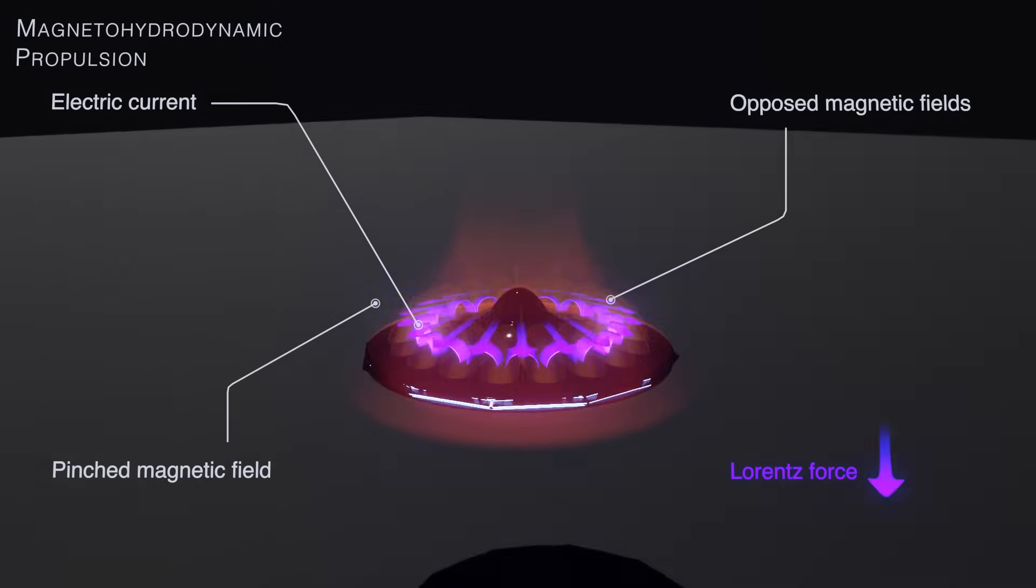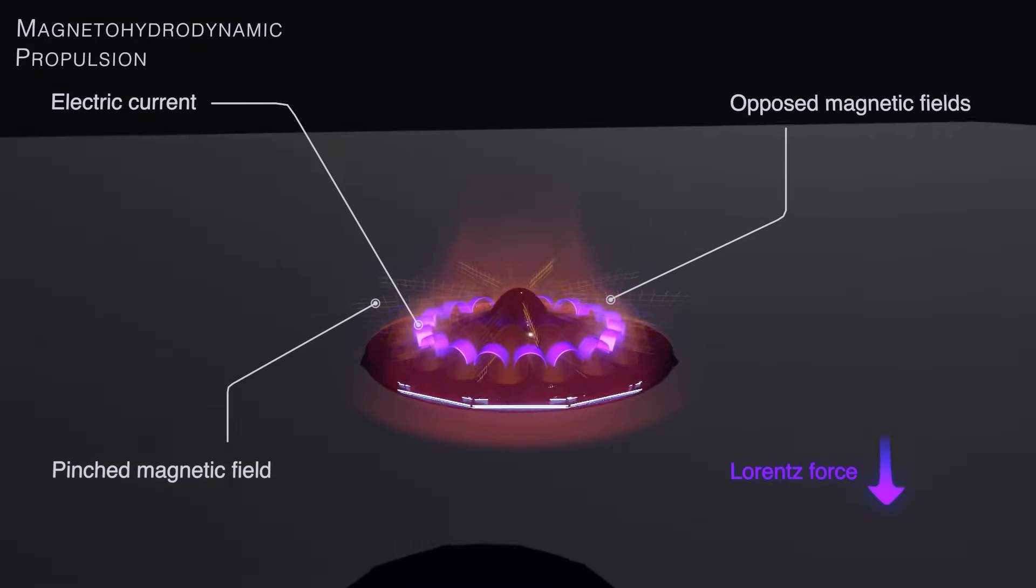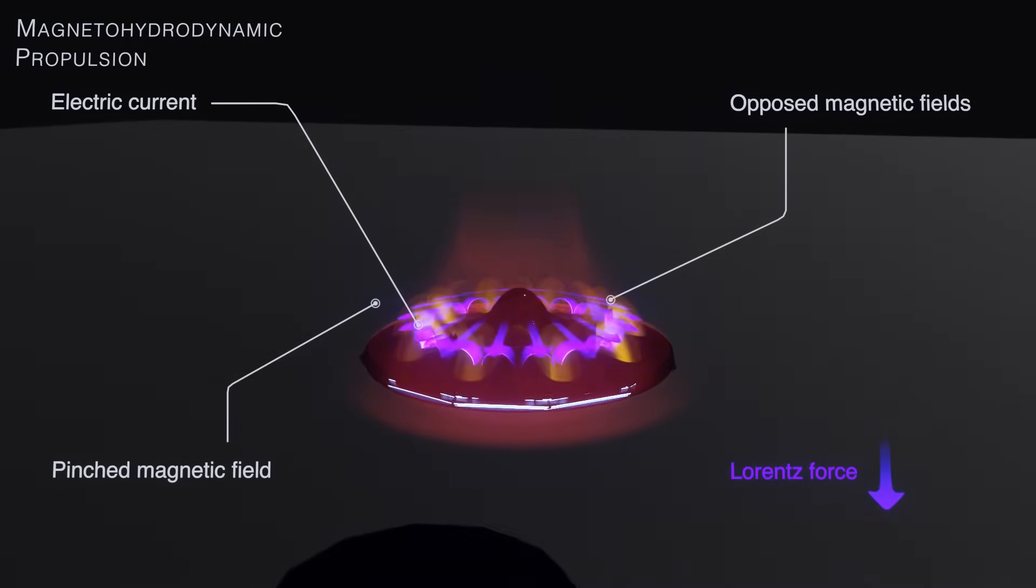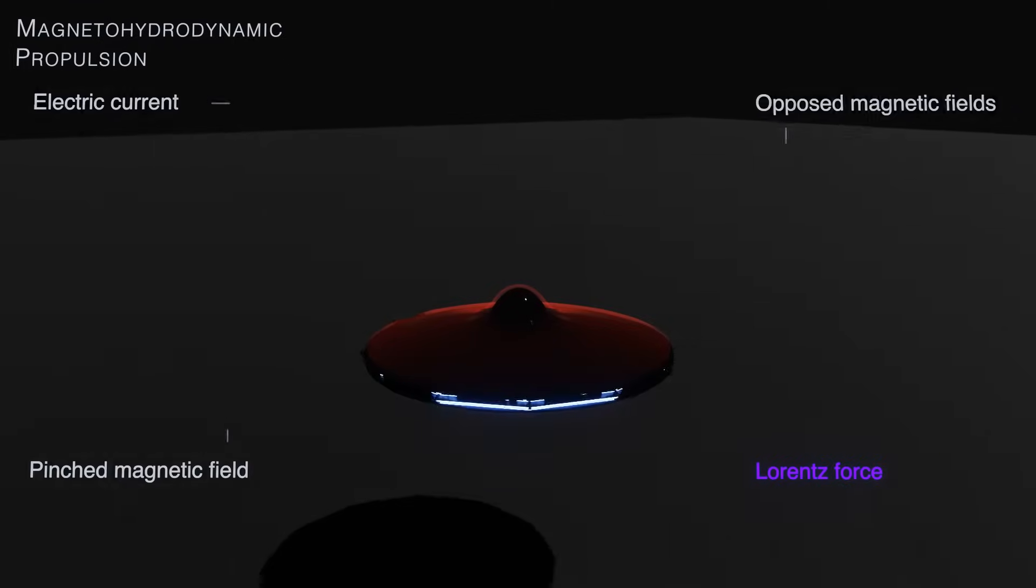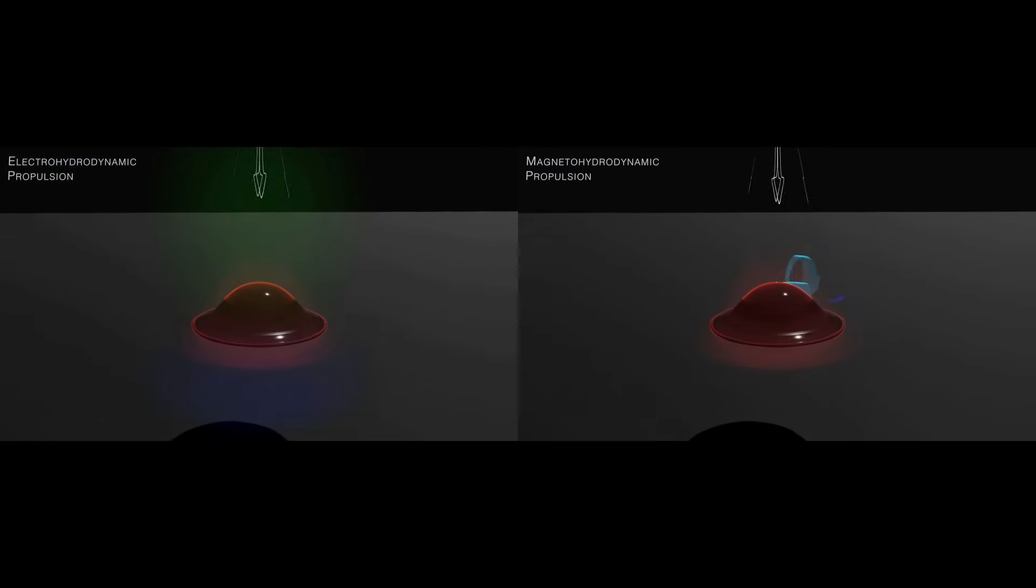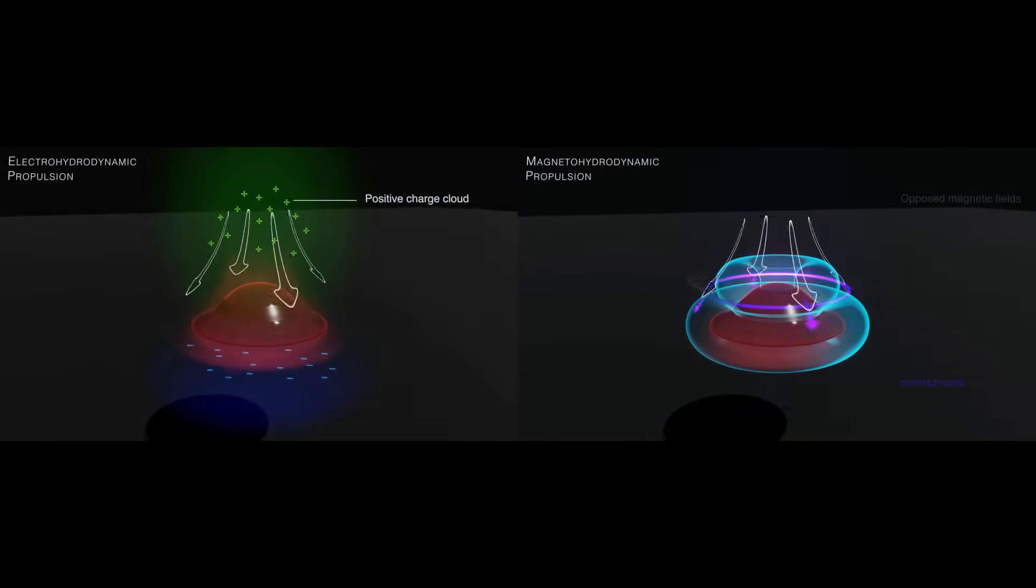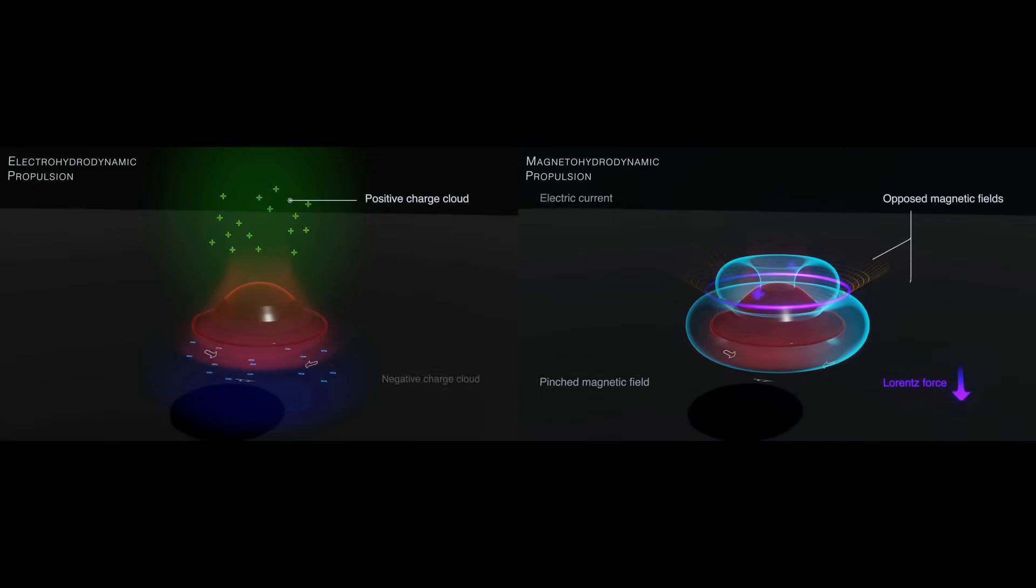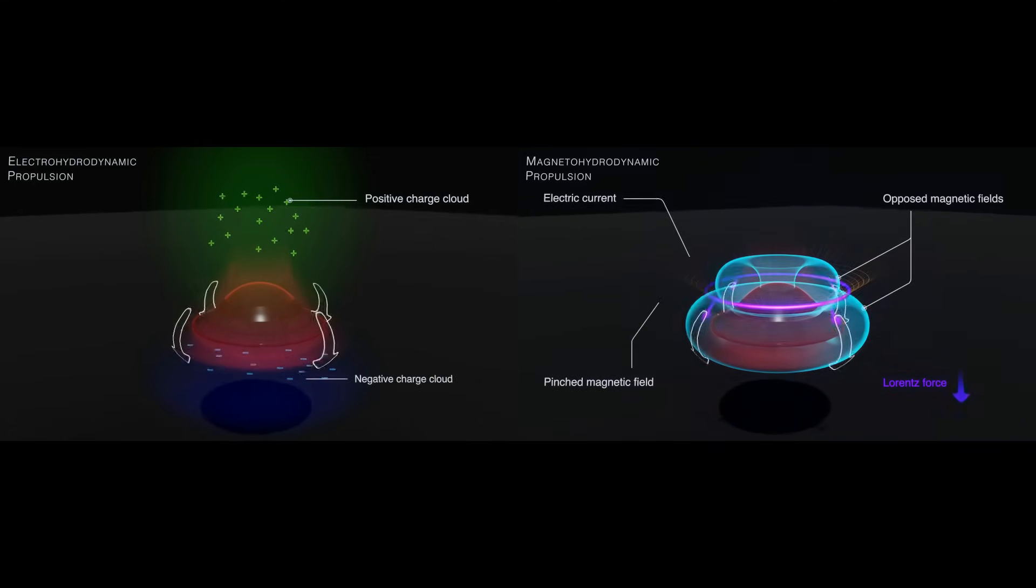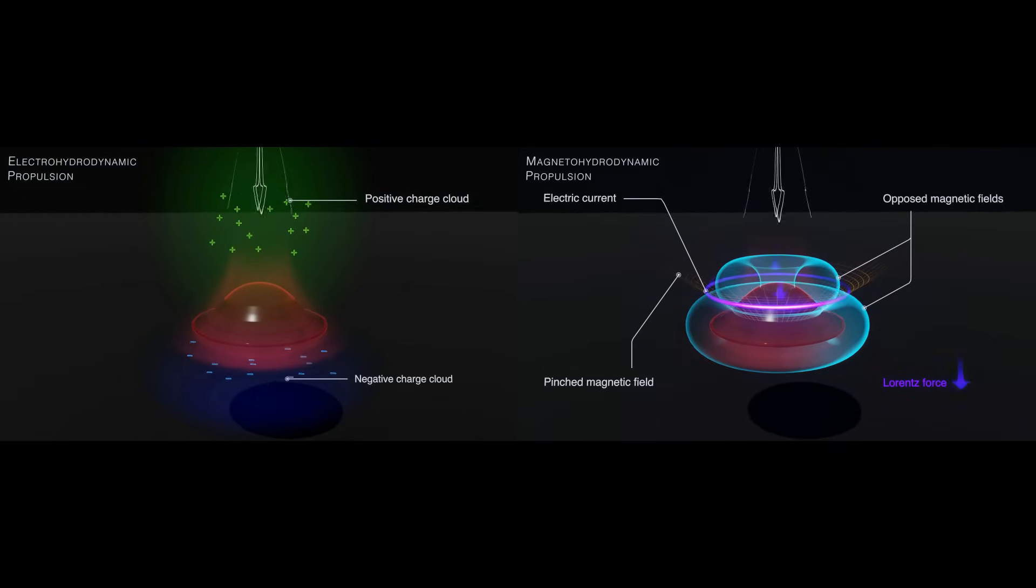Once the air is ionized, it can be moved via electromagnetic forces such as the Lorentz force or via an ion wind effect. This is where EHD propulsion, ionized wind propulsion, and MHD propulsion can sometimes be confused with each other, because in some vehicle designs, both forms of propulsion can be implemented on the same vehicle to maximize efficiency.